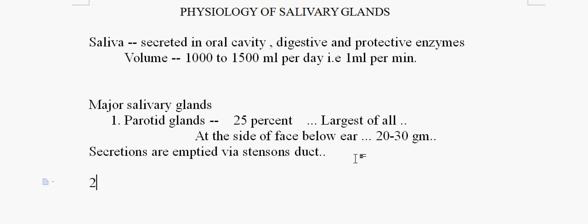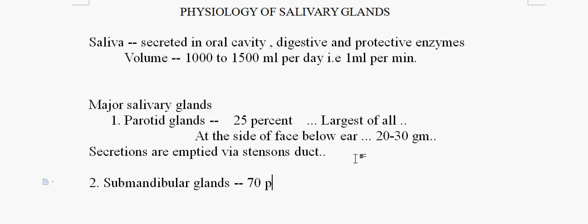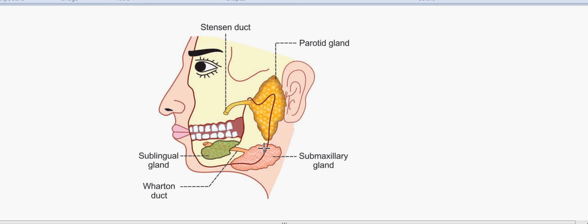The next major salivary gland is the submandibular gland, also called the submaxillary gland. It secretes 70% of the total saliva, which is the maximum among all the salivary glands. The average weight of this gland is around 8 to 10 grams.